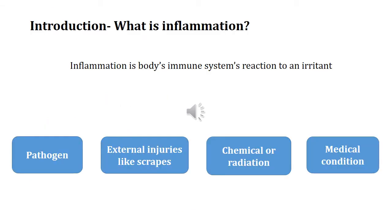Now let us begin with the first part. How can you define inflammation? Inflammation is basically the body's immune system's reaction to an irritant. Whenever there is a foreign body which enters, the response given by our body is in the form of inflammation.